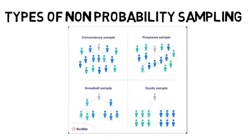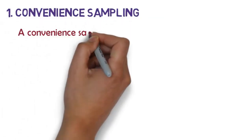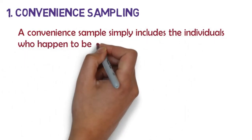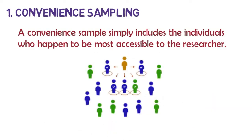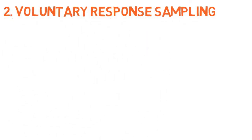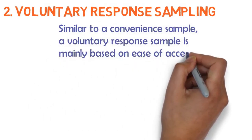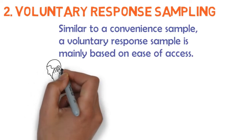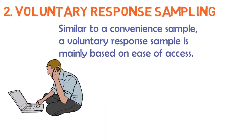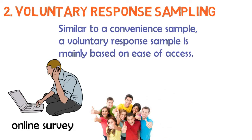There are four main types of non-probability sampling. One, we have convenient sampling. A convenient sample simply includes the individuals who happen to be most accessible to the researcher. This is an easy and inexpensive way to gather initial data, but there is no way to tell if the sample is representative of the population, so it can't produce generalizable results. Two, we have voluntary response sampling. Similar to a convenient sample, a voluntary response sample is mainly based on ease of access. Instead of the researcher choosing participants and directly contacting them, people volunteer themselves, for example by responding to a public online survey. Voluntary response samples are always at least somewhat biased, as people from a starting group will inherently be more likely to volunteer than others.